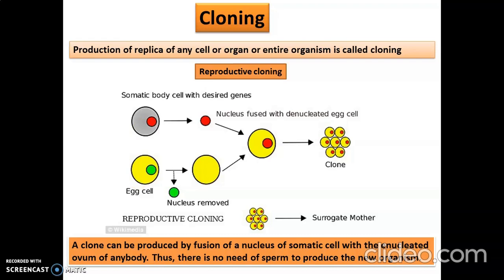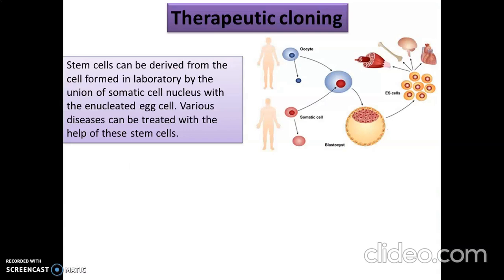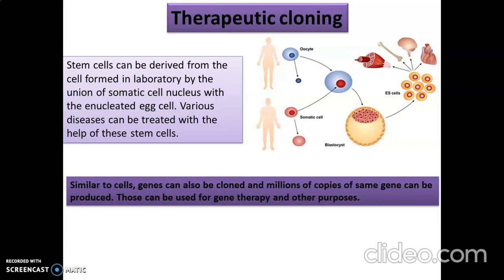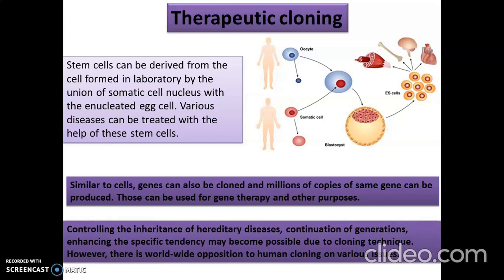Then we have therapeutic cloning, which is used for therapy. Stem cells can be derived from the cell obtained in the laboratory by the union of a somatic cell nucleus with an enucleated egg cell. Various diseases can be treated with the help of these stem cells. As you can see in the diagram, the oocyte and somatic cell are fused, producing a blastocyst or embryo, and from there these cells can be used for the development of body organs. Similarly, genes can also be cloned and millions of copies of the same gene can be produced for different purposes.